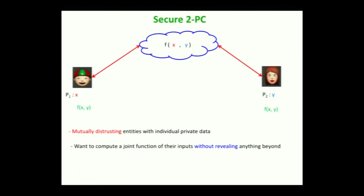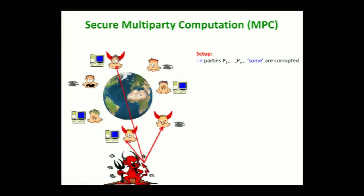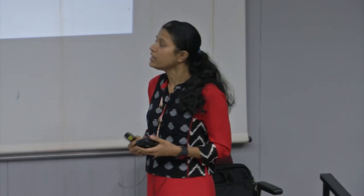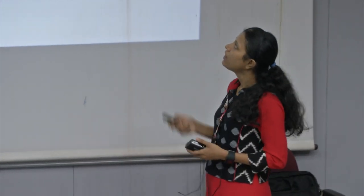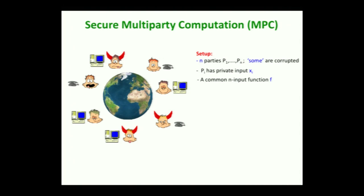The problem of secure two-party computation can be further generalized in terms of number of parties. Instead of two parties we can make it n parties, and what we get is secure multi-party computation where n can be two or more. The distrust is modeled by a centralized adversary who can corrupt some of these parties. Every party pi has a private input xi and there is a commonly agreed n-input function f they want to compute, with the constraint that nothing beyond the function output must be leaked.